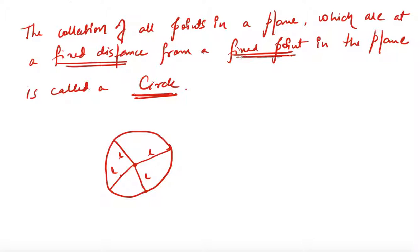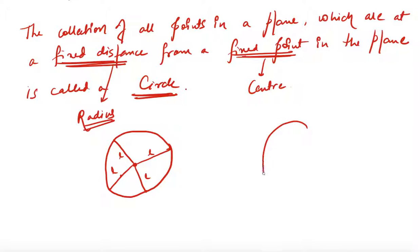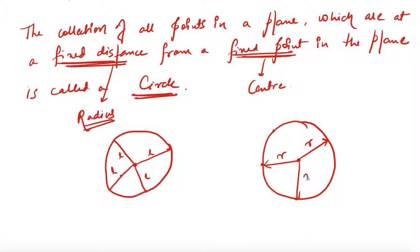This fixed point is known as the center of the circle, and this fixed distance is known as the radius of the circle. Let me draw this properly — this is my circle, this is my center, and this distance denoted by R is my radius. You take any point on this boundary, it will always be at a distance R from the center.